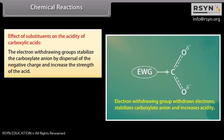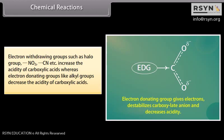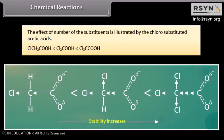Effect of substituents on the acidity of carboxylic acids: electron-withdrawing groups stabilize the carboxylate ion by dispersal of the negative charge and increase the strength of the acid. On the other hand, electron-donating groups cause concentration of negative charge, destabilize the carboxylate anion, and hence decrease the strength of the acid. Electron-withdrawing groups such as halo group, NO2, and CN increase the acidity, whereas electron-donating groups like alkyl groups decrease the acidity. The effect of substituent number is illustrated by chloro-substituted acetic acids: acid strength increases from chloroacetic acid to trichloroacetic acid.